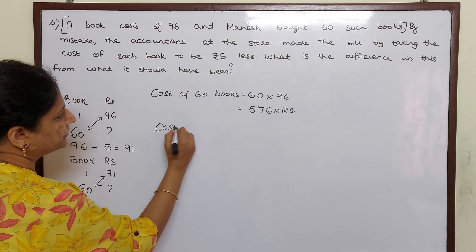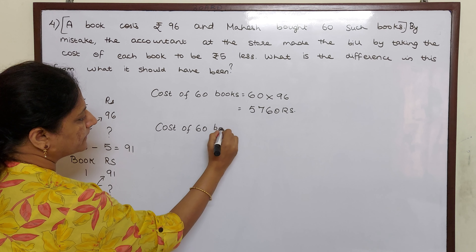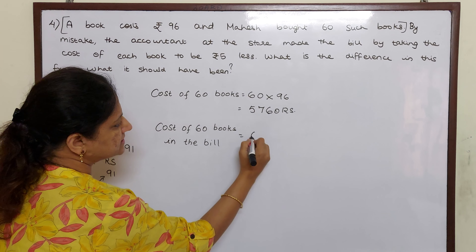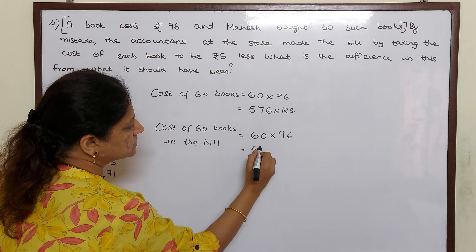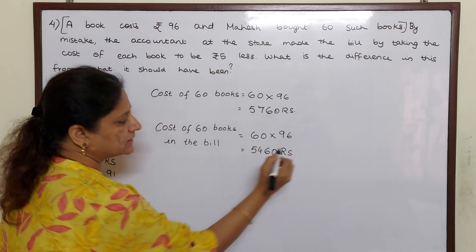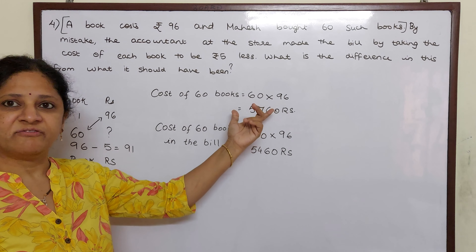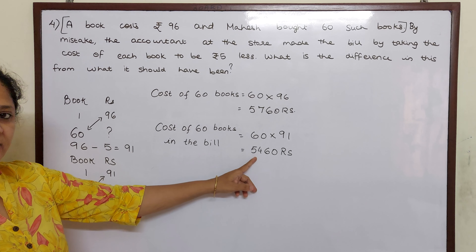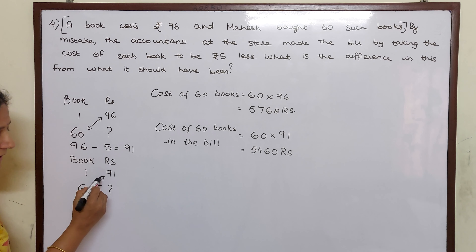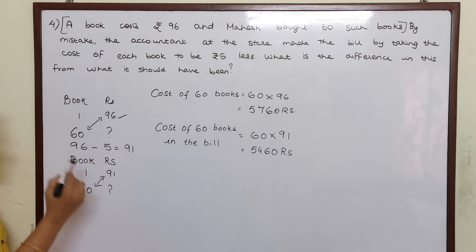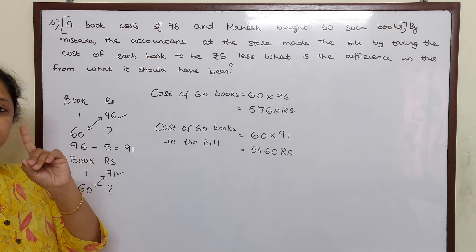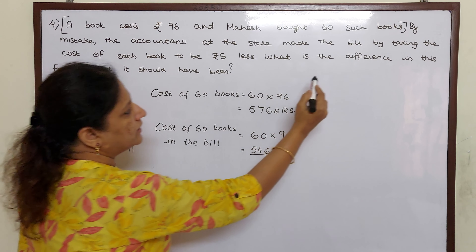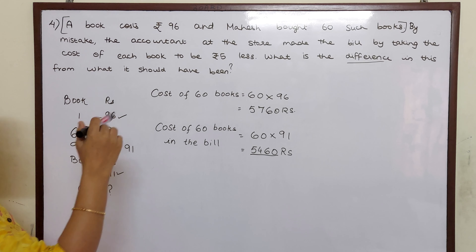The cost of 60 books in the bill was taken as 60 into 91, that is 5,460 rupees. That means Mahesh should have paid 5,760 but he paid 5,460. How did we get 5,460? 60 into 91. The accountant made a mistake of taking, instead of 96 rupees, the amount of one book as 91 rupees — 5 rupees less. So he made the bill of 5,460.